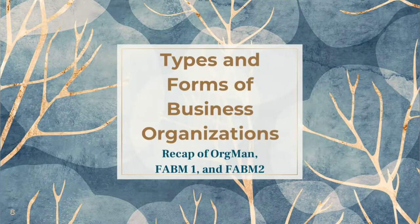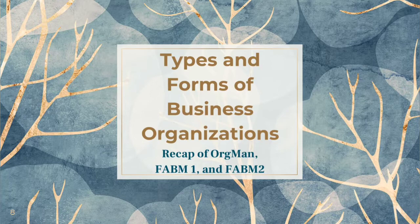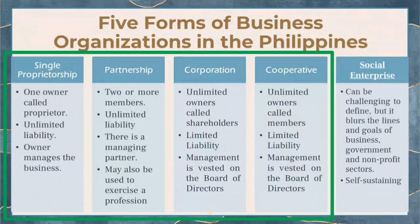First, we have a recap from Org Man and FABM on types and forms of business organization. The first four forms are single proprietorship, partnership, corporation, and cooperative — topics already covered in Org Man as well as FABM 1 and 2. Let's review the features of each.